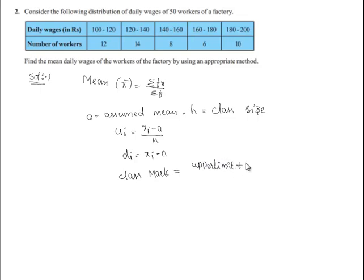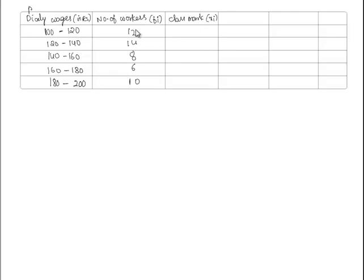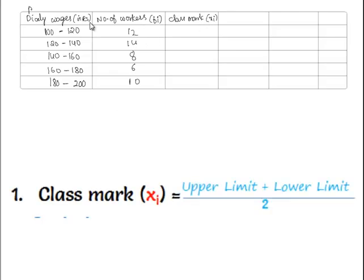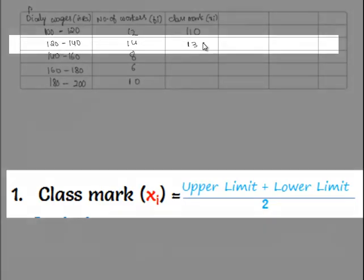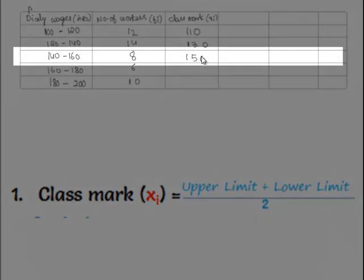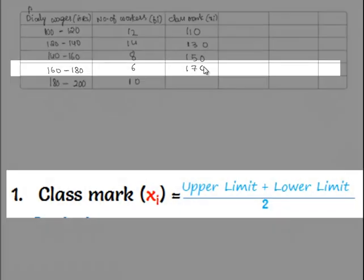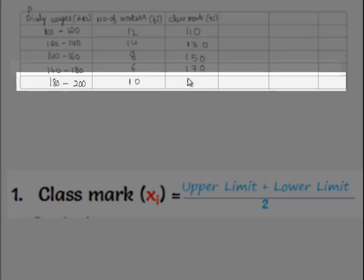Class mark is equal to upper limit plus lower limit by 2. Hence, for 100 to 120, we get 110 and similarly for the remaining we get 130, 150, 170 and 190.